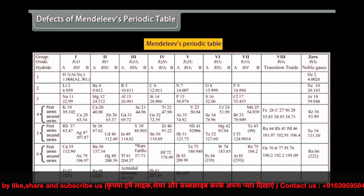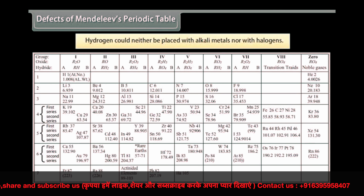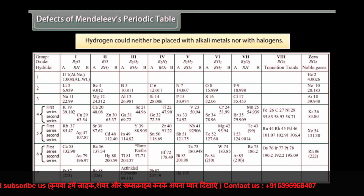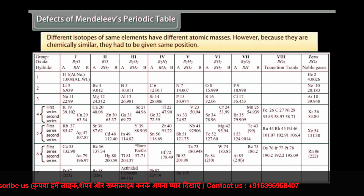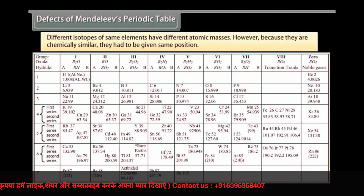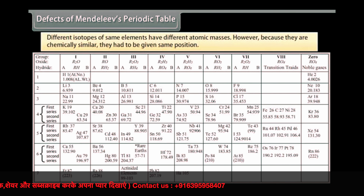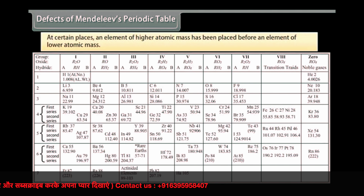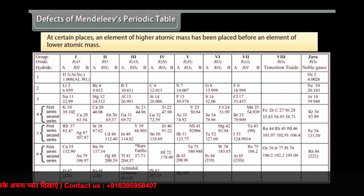Mendeleev's periodic table had certain defects. Hydrogen could neither be placed with alkali metals nor with halogens, as hydrogen resembles both. Different isotopes of the same element have different atomic masses, so each should be given a different position in the periodic table; however, because they are chemically similar, they had to be given the same position. At certain places, an element of higher atomic mass was placed before one of lower atomic mass — for example, argon (39.91) is placed before potassium (39.1).